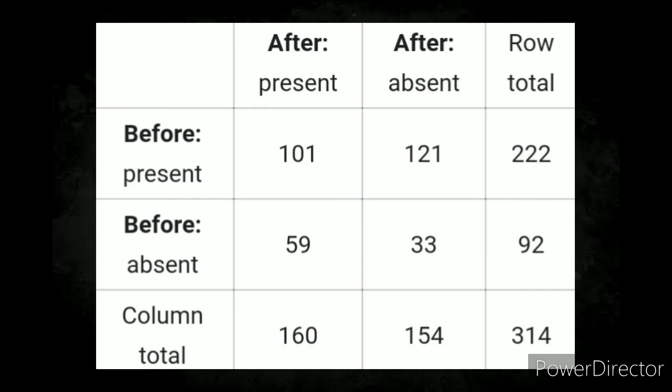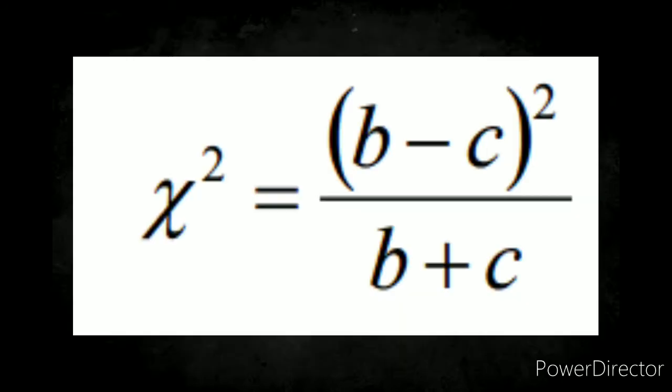So again, this is the table of the example given before we solve the McNemar test. And this is the formula that we use: chi-squared equals B minus C squared over B plus C.